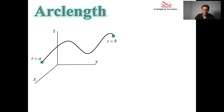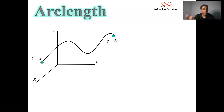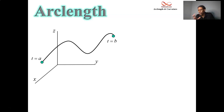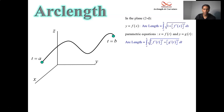You've seen this before — this isn't your first time seeing arc length. Back in the previous class, you calculated arc length when given y as a function of x in 2D. You calculated it by taking a derivative, squaring it, adding one, and taking a square root. It needed to be almost a perfect square to be integrable. The formula: derivative squared plus 1, take a square root, integrate from a to b.